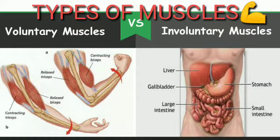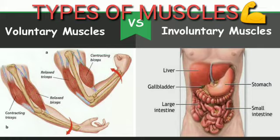First we will learn about voluntary muscles. The muscles that work under our will are called voluntary muscles. Working with our hands, walking, eating, etc. are functions that depend upon our will. Muscles used in these actions are called voluntary muscles. For example, muscles in our arms and legs are voluntary muscles.